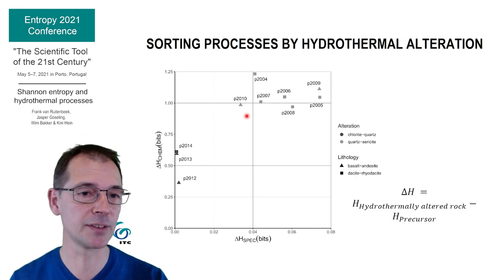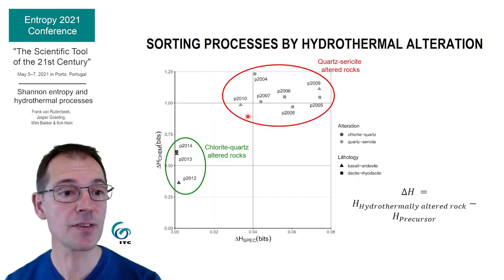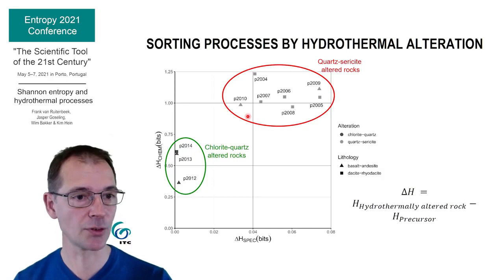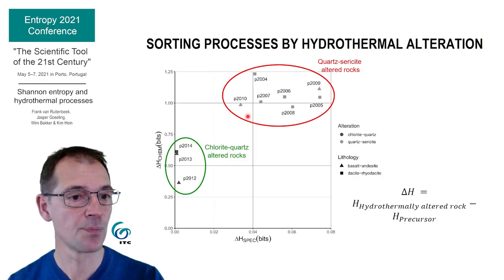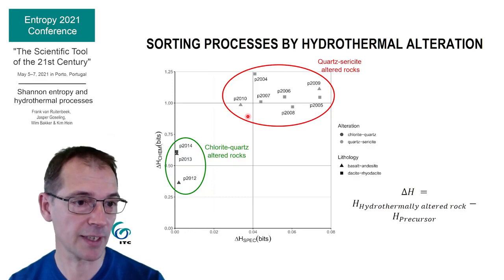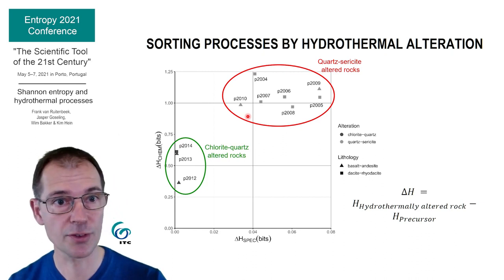We can calculate the difference in Shannon entropies between the altered rocks and their unaltered equivalents. In this figure, the difference in spectral and chemical entropies are plotted along the x and y-axis respectively. The two clusters of altered rocks are clearly shown here, while the unaltered rocks plot in the origin. The change in Shannon entropy is the direct result of the modification of the chemical and mineralogical composition of the rock by hydrothermal processes. This could be interpreted as a quantification of the effects of the processes on the rocks. Could we also interpret this as a form of information imposed on the rock? We are looking here at a reduction in the uncertainty in the chemical and spectral probability distributions.